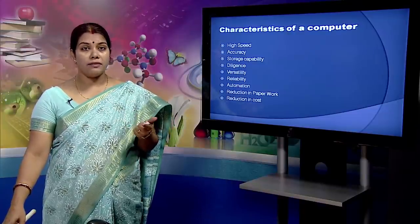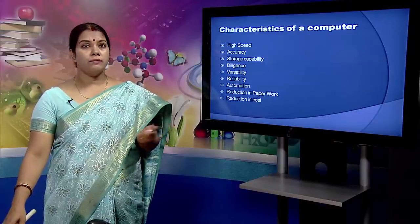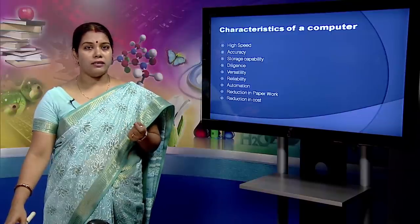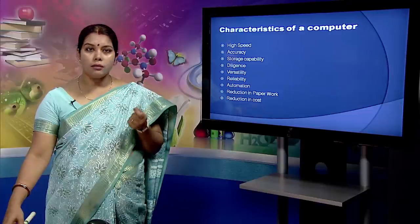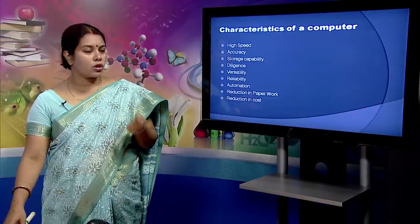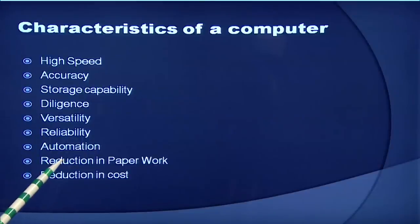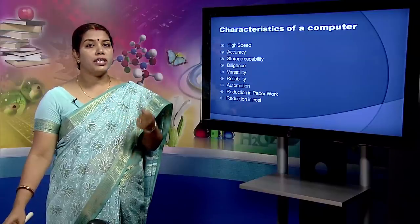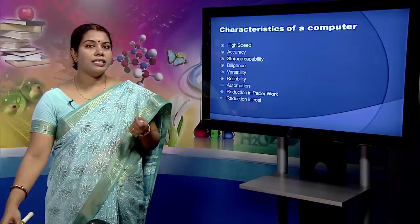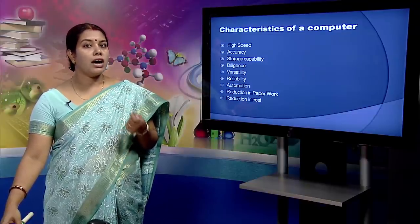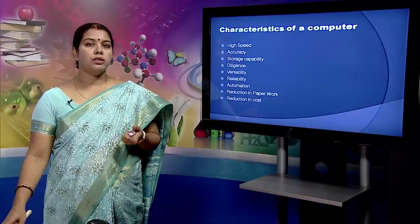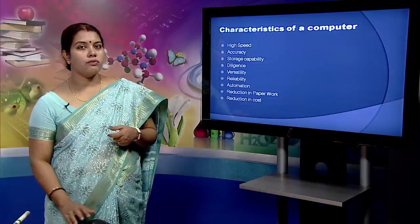The next characteristic is automation, which means the ability to perform a given task automatically. Once a program is given to the computer and stored in its memory, the program and instructions can control program execution without human interaction. The next characteristic is reduction in paperwork. The use of computers for data processing in an organization leads to reduction in paperwork and speeding up a process. As data in electronic files can be retrieved as and when required, the problem of maintaining large numbers of paper files gets reduced. The next is reduction in cost. Though the initial investment for installing a computer is high, it substantially reduces the cost of each of its transactions.